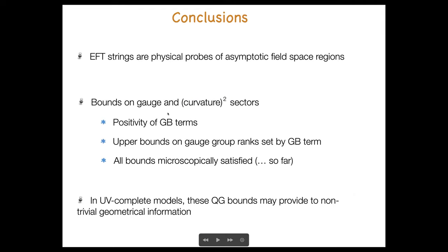Before concluding, I should mention that I've been omitting a possible additional term which can be supported on these strings, similar to a term supported on type IIA NS5-branes, which can contribute to the normal bundle anomaly. We interpret this possible term as capturing some hidden preferred five-dimensional structure. Taking account of this possible contribution, we get a modification of our bounds which depends in a cubic way on the charges — needed to match the UV completion results. To conclude: I hope I convinced you that these EFT strings provide natural physical probes of asymptotic field space regions and the corresponding perturbative physics, providing positivity bounds on the Gauss-Bonnet terms and upper bounds on the rank of gauge groups in terms of these Gauss-Bonnet terms. At least so far, all these bounds have been microscopically tested, and they may be used to get non-trivial information on the UV structure of string theory compactifications, such as on the Mordell-Weil group and in other similar examples.